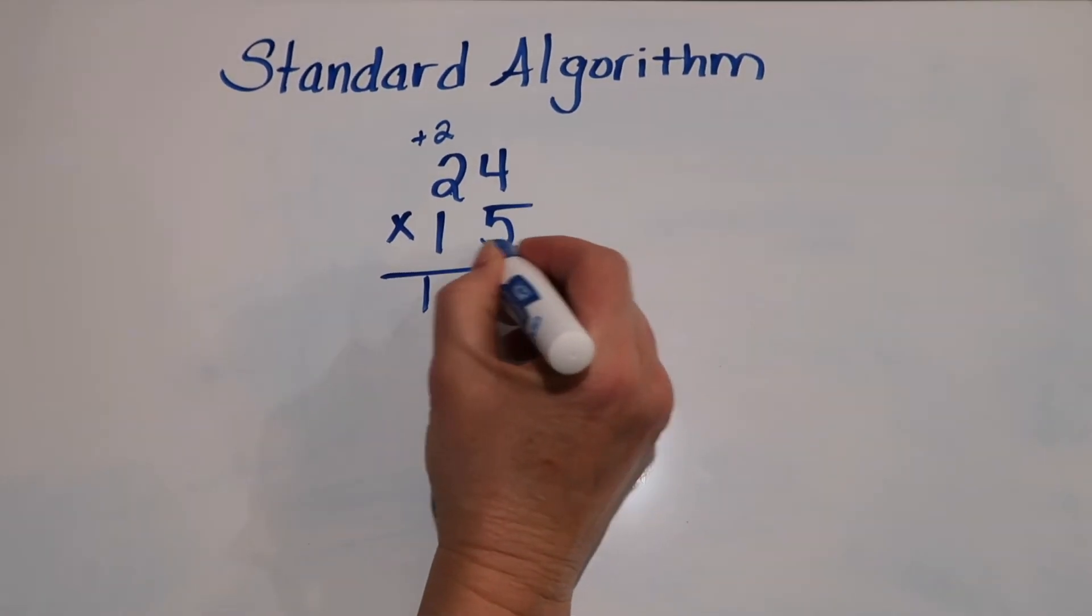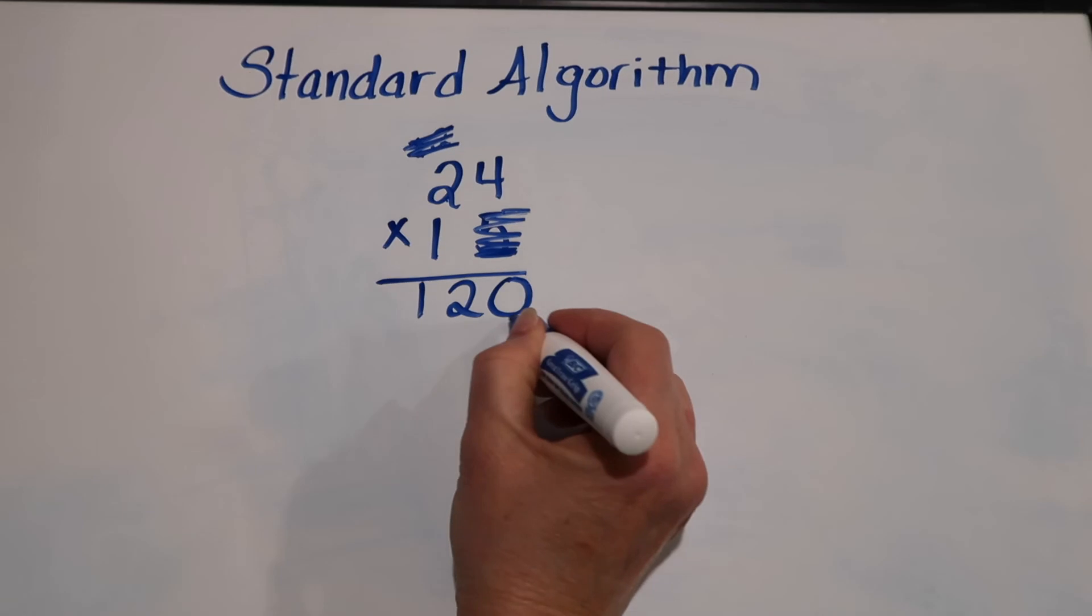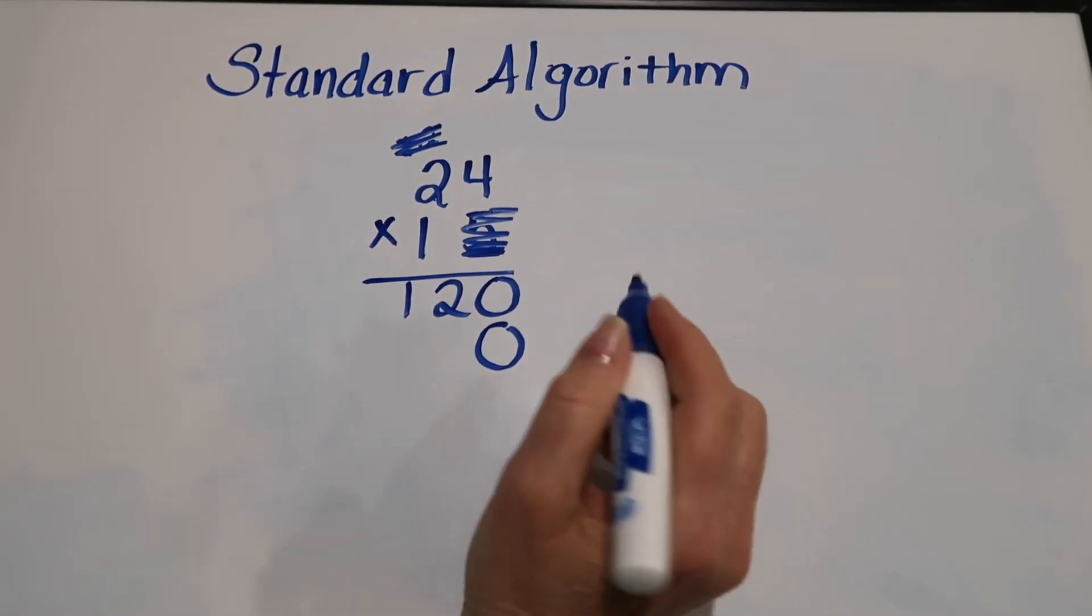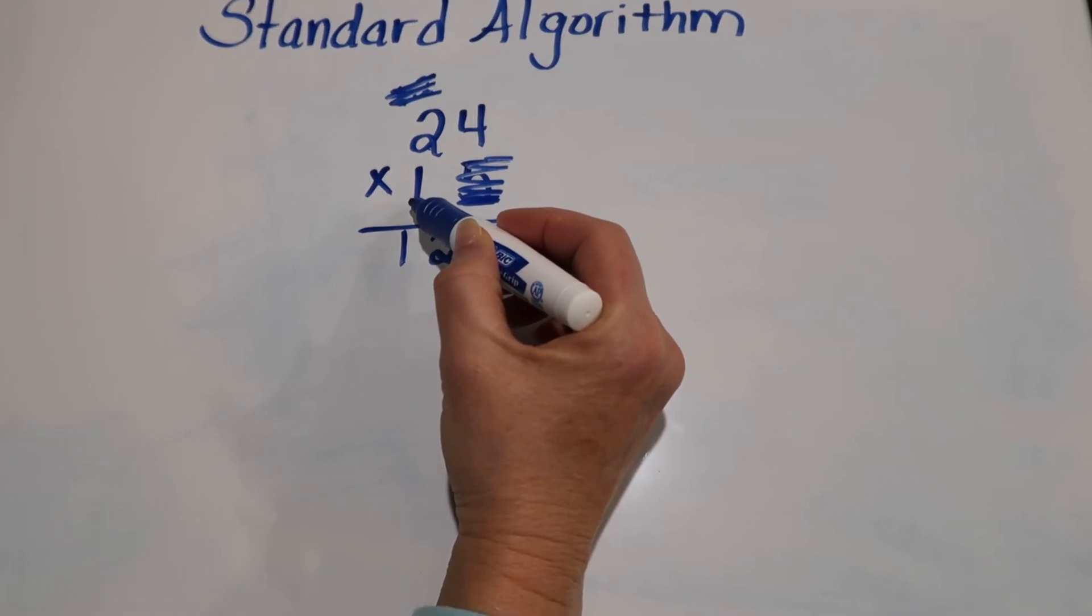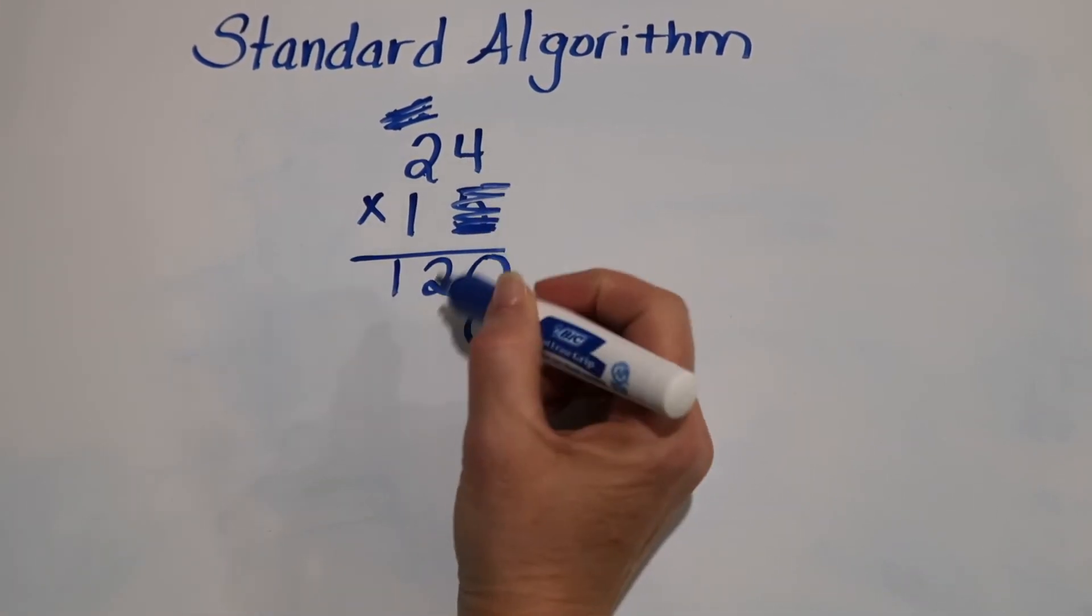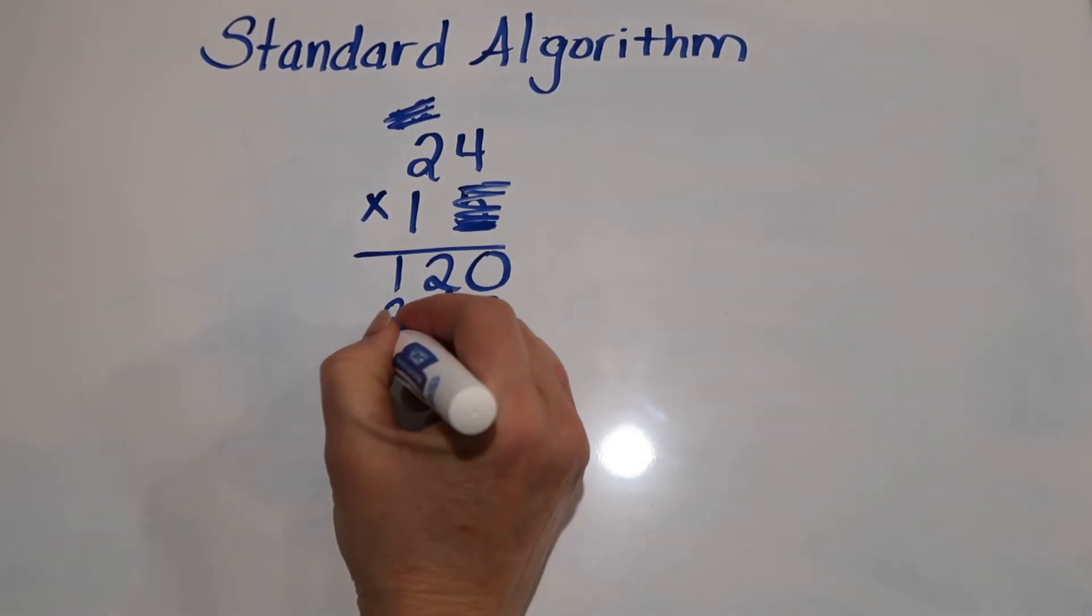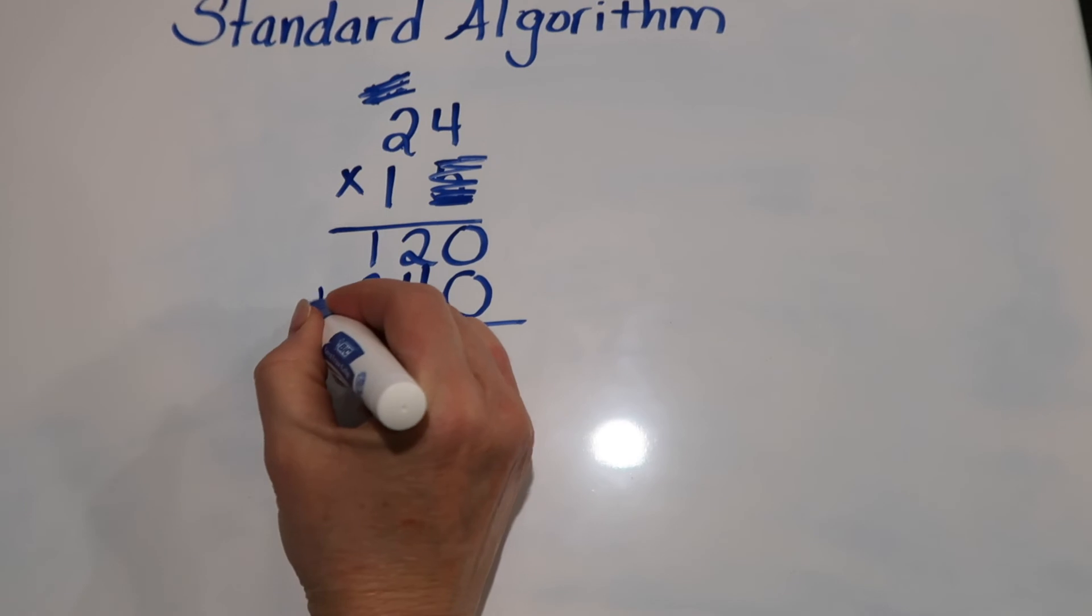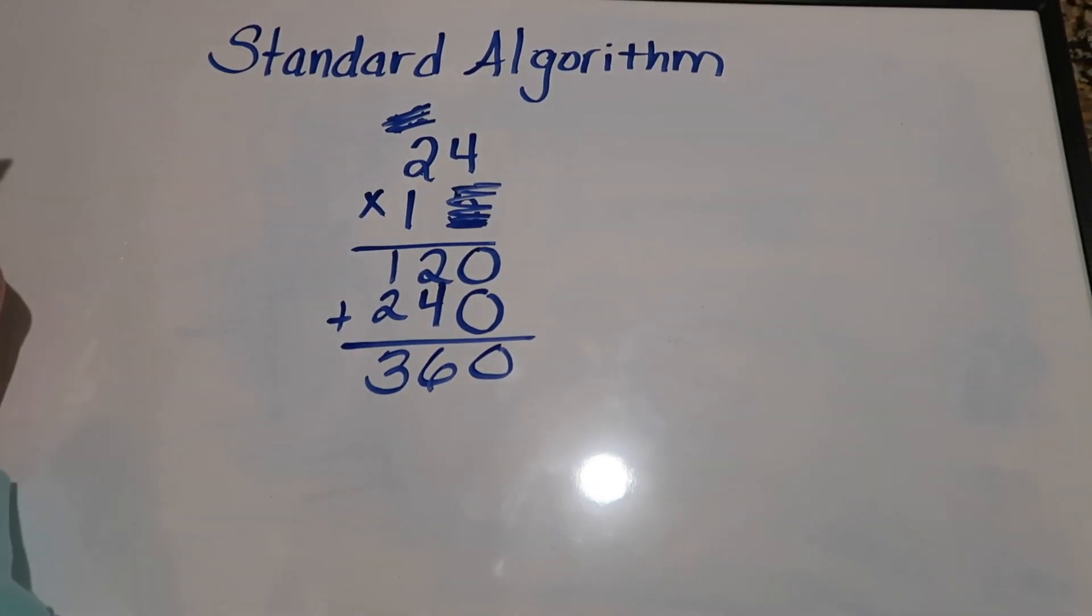Now we're going to cross out the 5, cross out the 2, and we're going to place the 0 under the ones column because we're done with the ones. Now we're going to start with the 1 and multiply going diagonal. 1 times 4, which is 4, and then 1 times 2, which is 2.